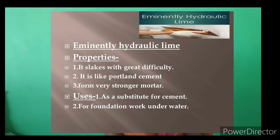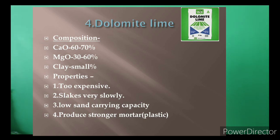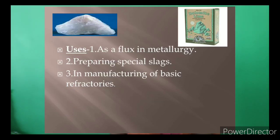Eminently hydraulic lime slakes with great difficulty, resembles Portland cement, forms strong mortar, and is used as a substitute for cement in foundation work under water. Dolomite lime contains calcium oxide 60–70%, magnesium oxide 30–60%, and a small percentage of clay. It is expensive, slakes very slowly, has low sand-carrying capacity, produces strong plastic mortar, and is used as flux in metallurgy, for preparing special slags, and in manufacturing basic refractories.